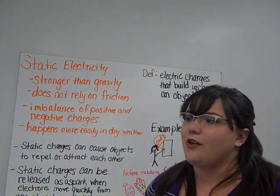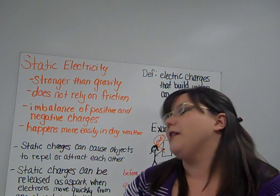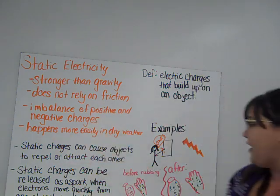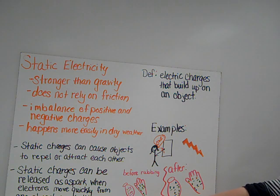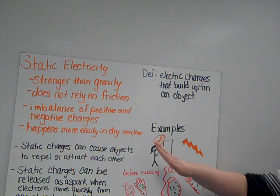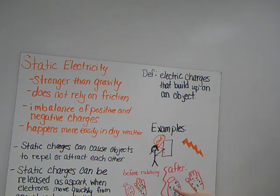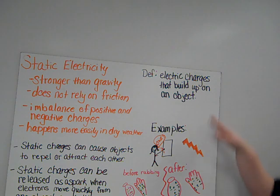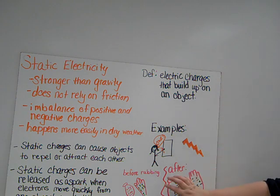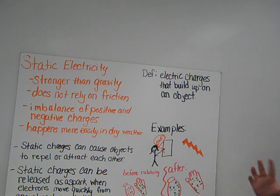Static electricity does not rely on friction. Even though you might think scooting your feet across the rug a lot might shock your sister when you touch her, it doesn't rely on friction. Let's look at this diagram. If we look at a picture of a balloon and a hand, before we rub the balloon on the hand, we see positive and negative charges equal on both. After rubbing it for a while, the balloon has a buildup of negative electron charges, and the hand has lots of positives. So if you pull the balloon close to someone's hair, it would attract the hair and pull it towards it.